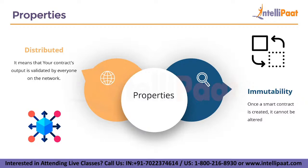If we talk about immutability, it means that once a smart contract is created, it cannot be altered — no one can tamper with your contract's code behind your back. If we say it is distributed, it means that your contract's output is validated by everyone on the network. A single person cannot compel the contract to release funds since others on the network will notice and flag the attempt as invalid. Smart contract tampering becomes nearly impossible.